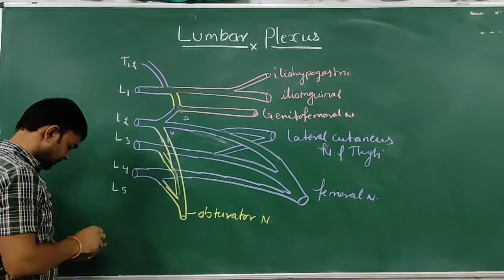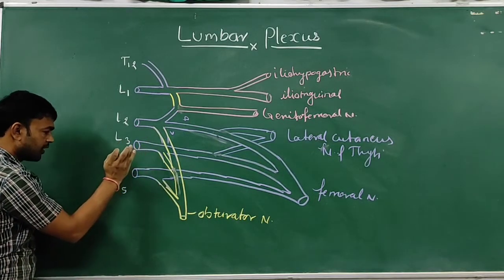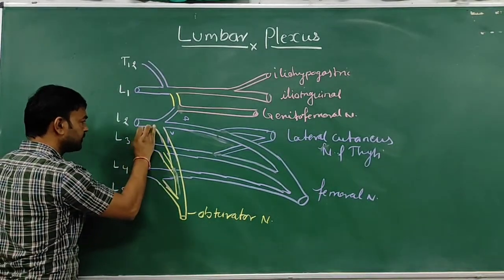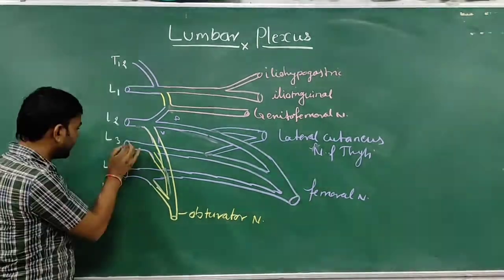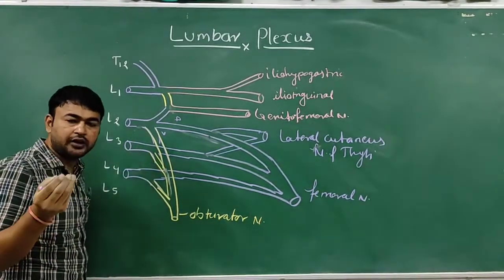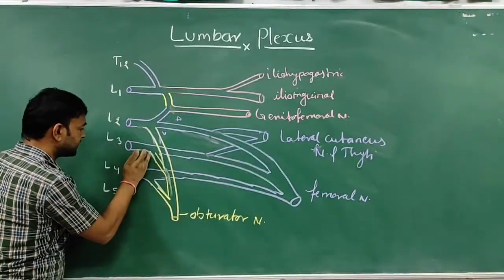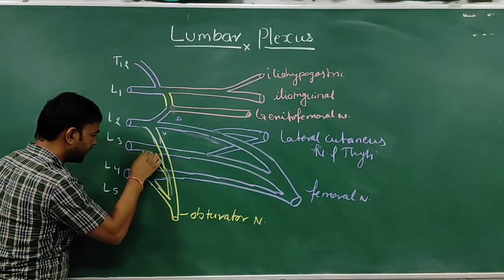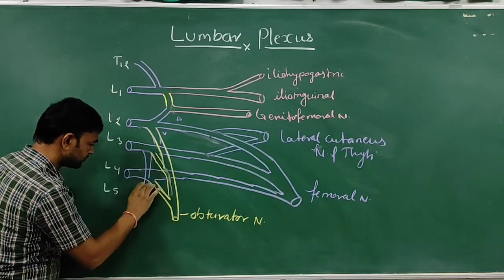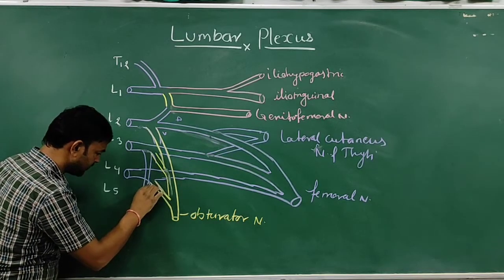Sometimes, from the ventral division of L2 and L3, and also from L3 and L4, in 25 to 30 percent of cases, there is an accessory obturator nerve.